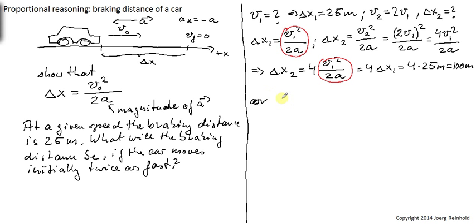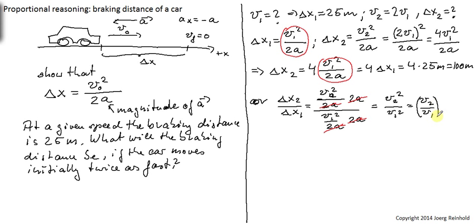You can also just calculate, for example, delta x2 over delta x1. You know that delta x2 is V2 squared over 2a and delta x1 is V1 squared over 2a. So, if I multiply this numerator and denominator by 2a, these here cancel out. And what I find is, I find V2 squared over V1 squared equals V2 over V1 squared. And V2 divided by V1 is just 2 squared. So, this is 4.